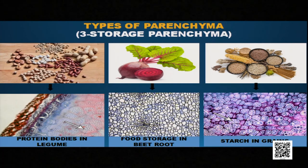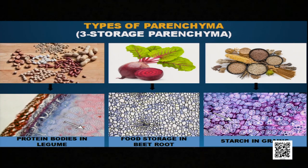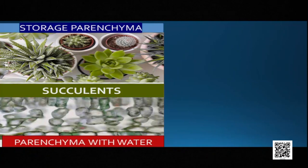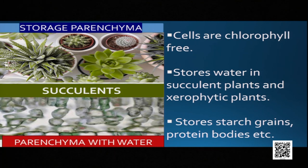The third type of parenchyma tissue is storage parenchyma. As the name suggests, it stores food. In legumes it stores protein; in beetroot it stores food; in grains like rice, wheat, and maize it stores starch. It also stores water in xerophytic and succulent plants. The characteristics of storage parenchyma: the cells are chlorophyll-free, they store water in succulent and xerophytic plants, and they also store starch grains, protein, and lipids in different food particles.